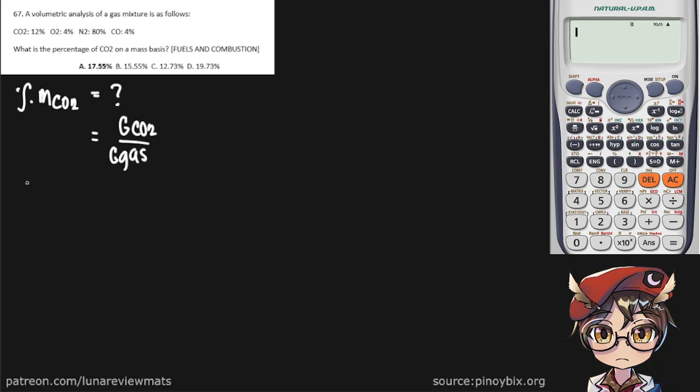Let's first recall the molecular weight of our components. CO2 has a molecular weight of 44. Oxygen has a molecular weight of 32. Nitrogen has a molecular weight of 28. And finally, our carbon monoxide also has a molecular weight of 28.